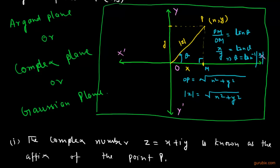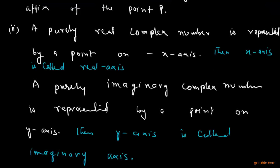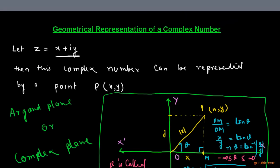This theta is called the argument of the given complex number. So this is the complete geometrical representation of a complex number.